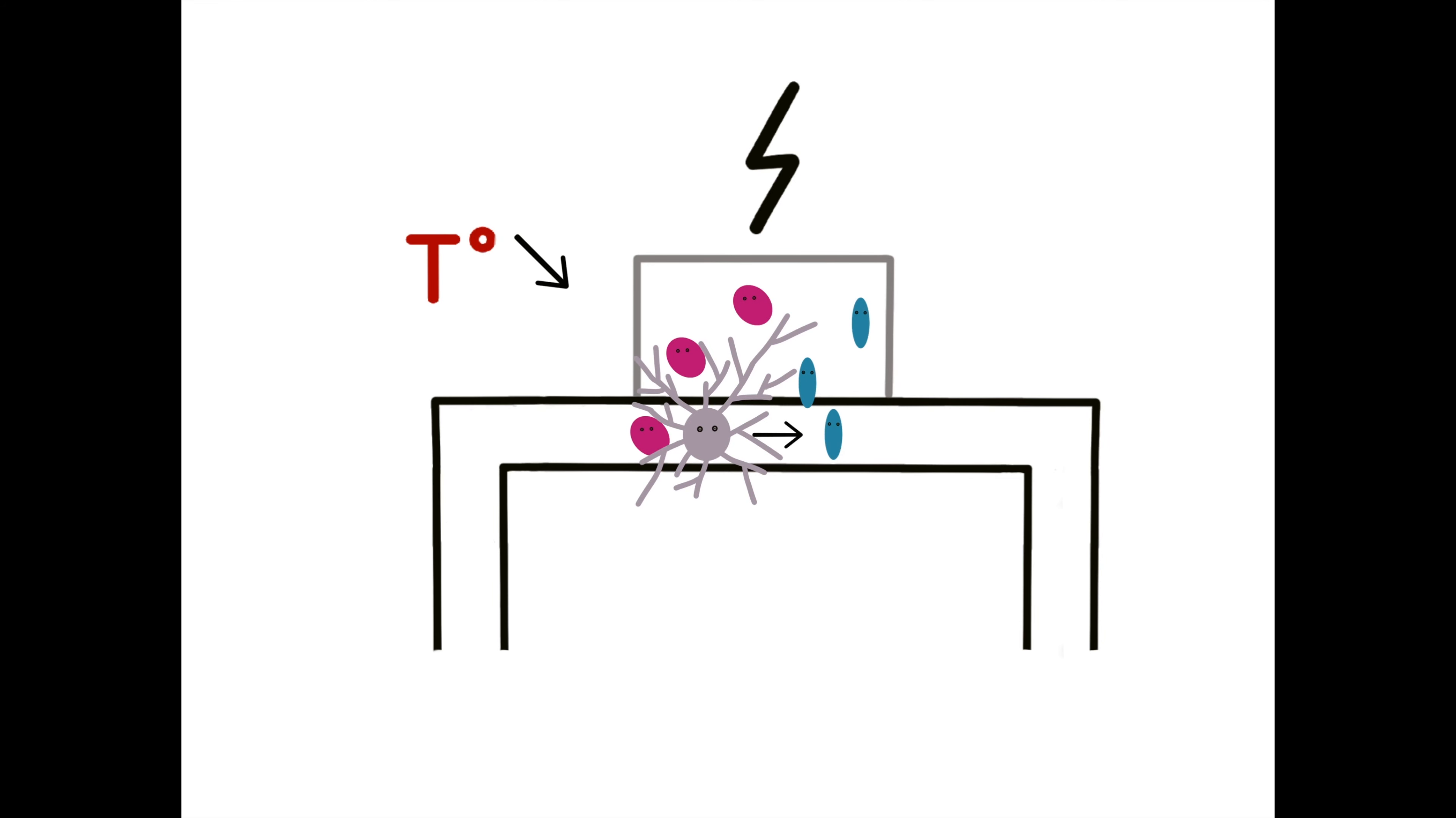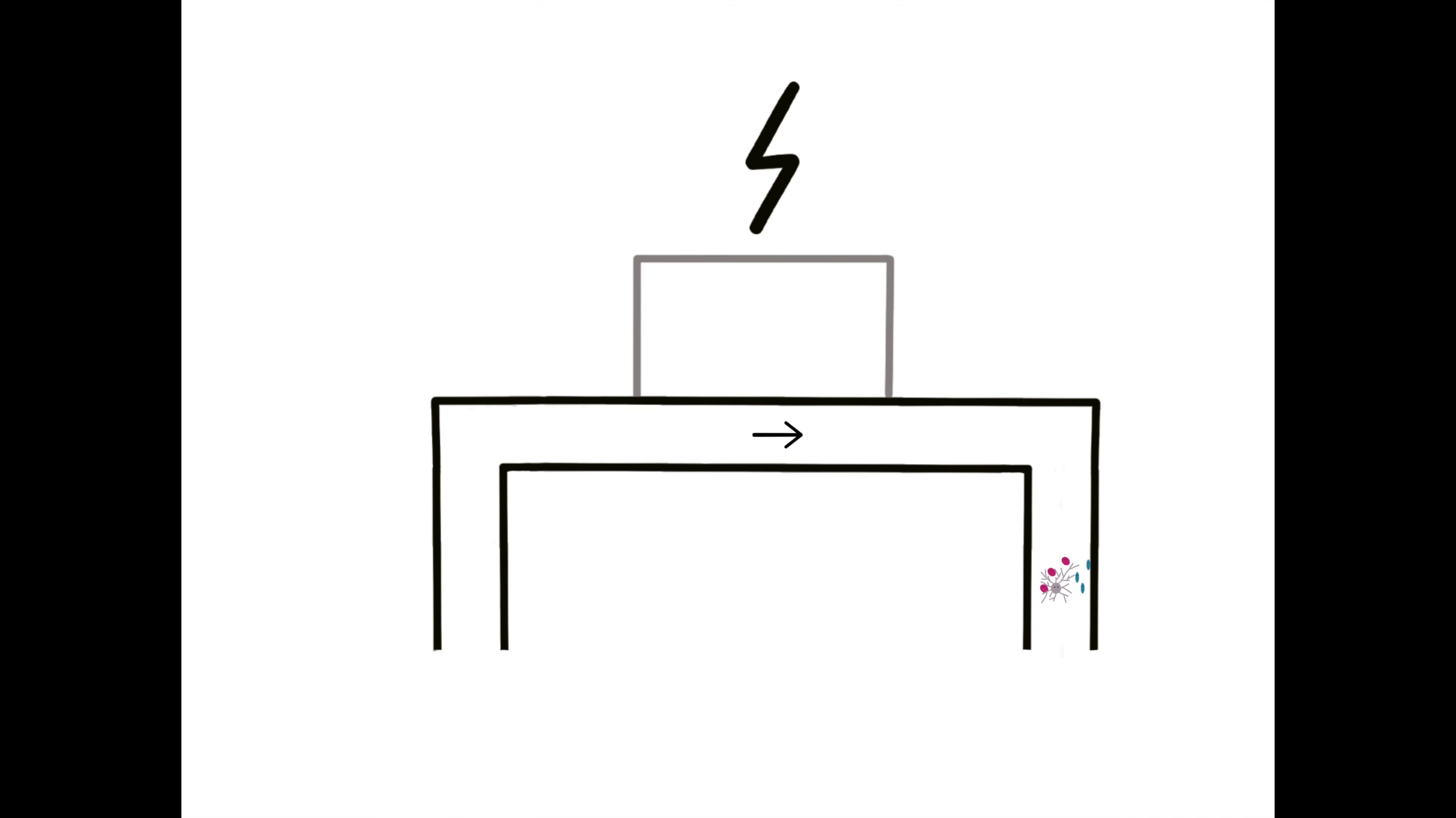That microbial growth can cause issues in the power plant, for example by blocking filters or inducing mineralization. Afterwards, the microorganisms are brought down with the fluids.